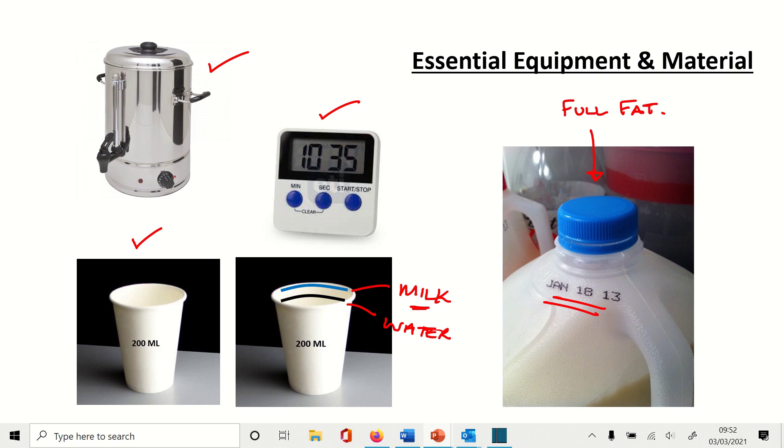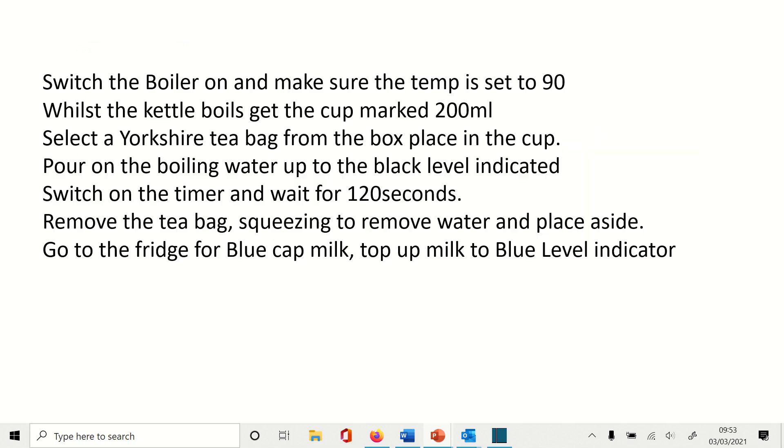Now with those variables in mind, let's go through the standard operating procedure and let's make sure that we cover all of those variables. So here we go. It says switch the boiler on and make sure that the temperature is set to 90 degrees.